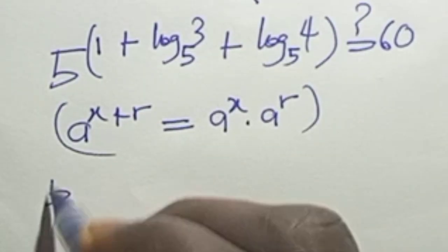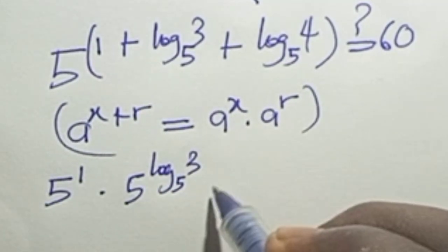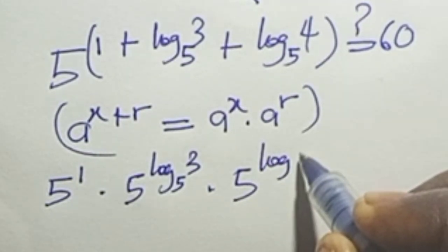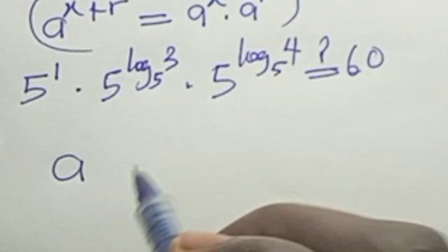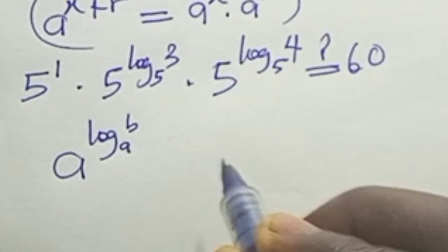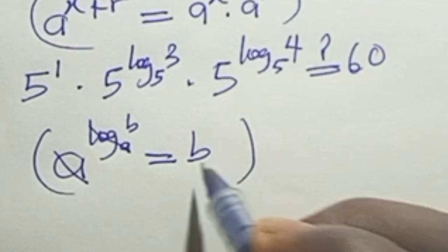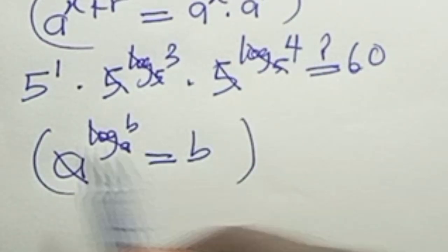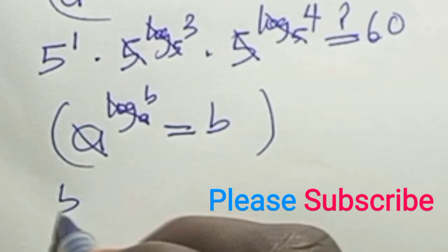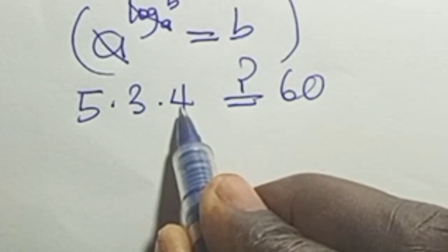Our equation becomes 5 raised to the power 1, times 5 raised to the power log base 5 of 3, times 5 raised to the power log base 5 of 4, equals 60. Since a raised to power log base a of B equals B, the base 5 cancels with log base 5, giving us 5 times 3 times 4 equals 60. That is 15 times 4 equals 60.